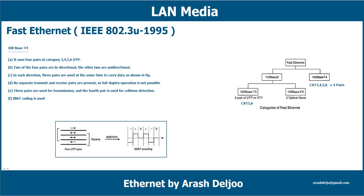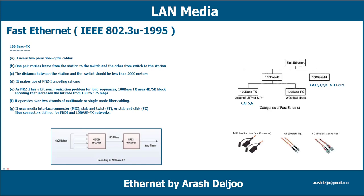About 100Base-FX: it uses two pairs of fiber optic cables. One pair carries frames from the station to the switch and the other from switch to the station. The distance between the station and the switch should be less than 2000 meters. It uses NRZ-I encoding, but since NRZ-I has a bit synchronization problem for long sequences, 100Base-FX uses 4B/5B block encoding, which increases the bit rate from 100 to 125 Mbps.